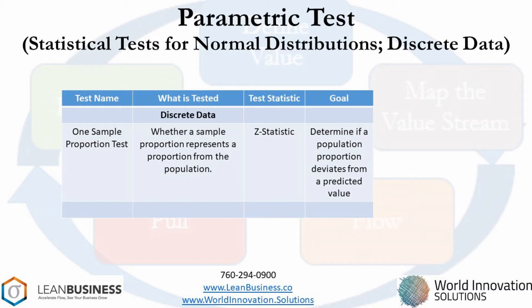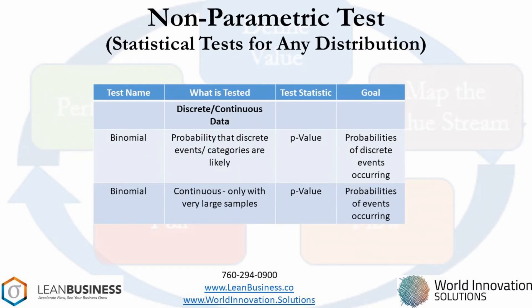Let's move on to the binomial test, which also analyzes discrete data. The binomial test is listed twice here. The first representation is the most used version of this test and is used to test discrete data samples. The bottom list shows that the test can also be used for continuous sample data if you have a large number of samples. The discrete use of the binomial test is used to determine if there is a deviation from a theoretical distribution of observations.